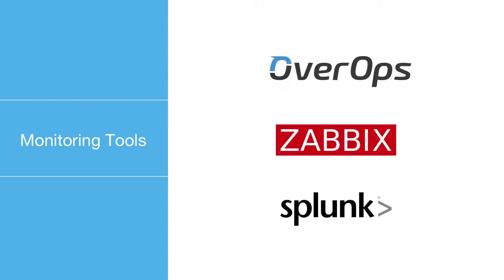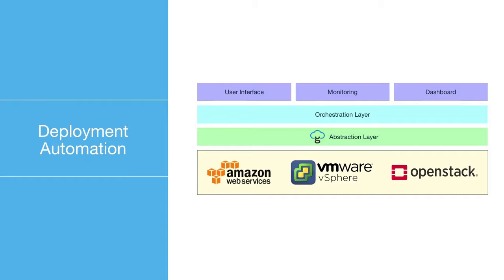Deployment automation also needs to integrate very well with our monitoring solutions. OverOps, Zabbix, and Splunk are our monitoring solutions of choice — OverOps for application and JVM-level monitoring, Zabbix for instance and OS-level monitoring, and Splunk for our logs. There's an abstraction layer that provides a consistent API for working with the various clouds we run on. The system is built in Scala, Akka, and Cassandra, and uses Puppet and Hyra to automate software installation and configuration on instances as they're created. On top of that, we developed a flexible orchestration layer based on the Activiti BPM solution — a very flexible XML-based system for orchestrating workflows, allowing those workflows to be backed by custom Java code.